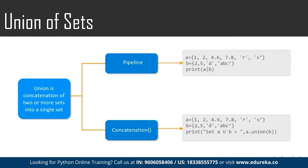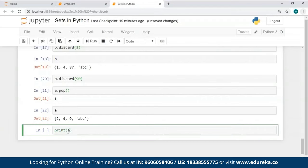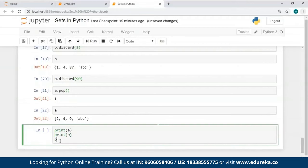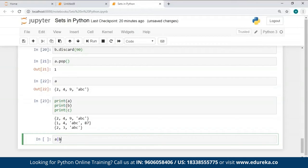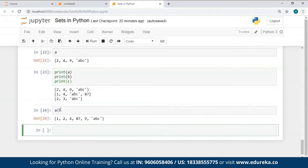Union of sets refers to the concatenation of two or more sets into a single set. If there are common values, the resulting set will contain just one copy of the common element. You can perform the union operation in two ways: using the pipeline symbol `|` or using the `.union()` method. I've used the pipeline symbol to find the union of A and B — all elements present in both sets are returned as a new set, with common elements printed just once.